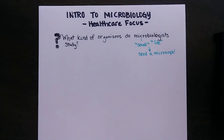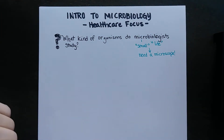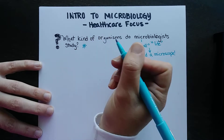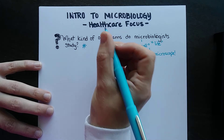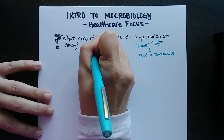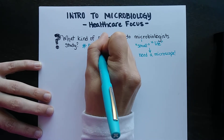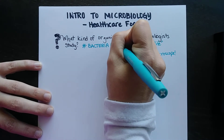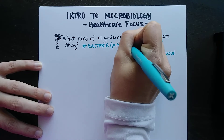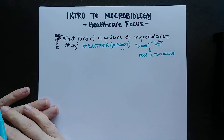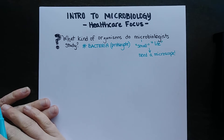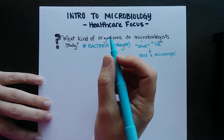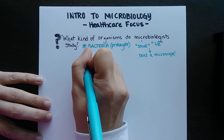A medical microbiologist thinks about the kinds of things that can make people sick — what we call pathogens, or disease causers. These can be bacteria. Someone getting a bacterial infection is dealing with a type of organism called a prokaryote, which means it doesn't have a nucleus and doesn't have organelles like mitochondria, Golgi bodies, or endoplasmic reticulum.